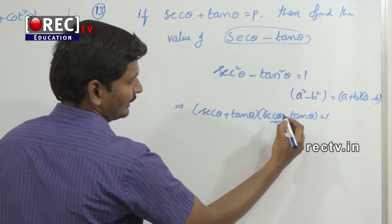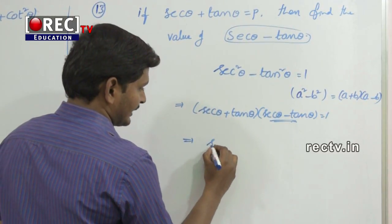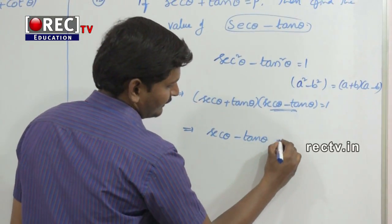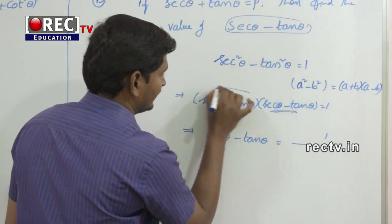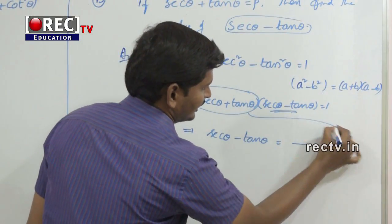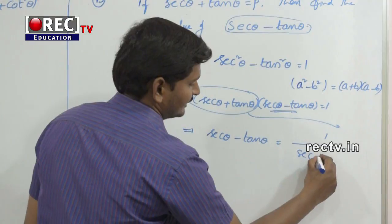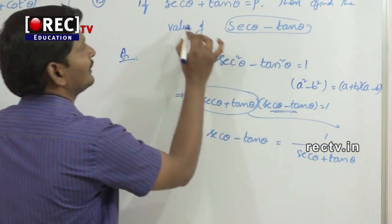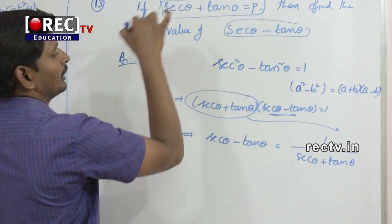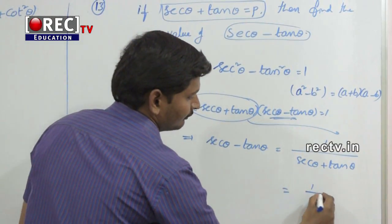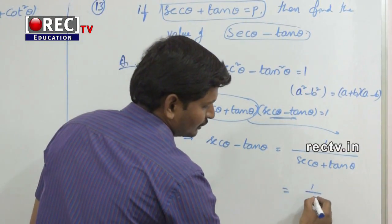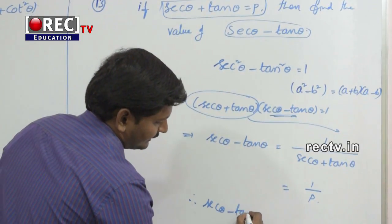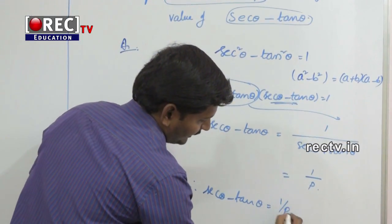We need to find sec theta minus tan theta, so we keep that term on one side. This implies sec theta minus tan theta equals 1 divided by sec theta plus tan theta. Since the given value is sec theta plus tan theta equals p, therefore sec theta minus tan theta equals 1 by p.